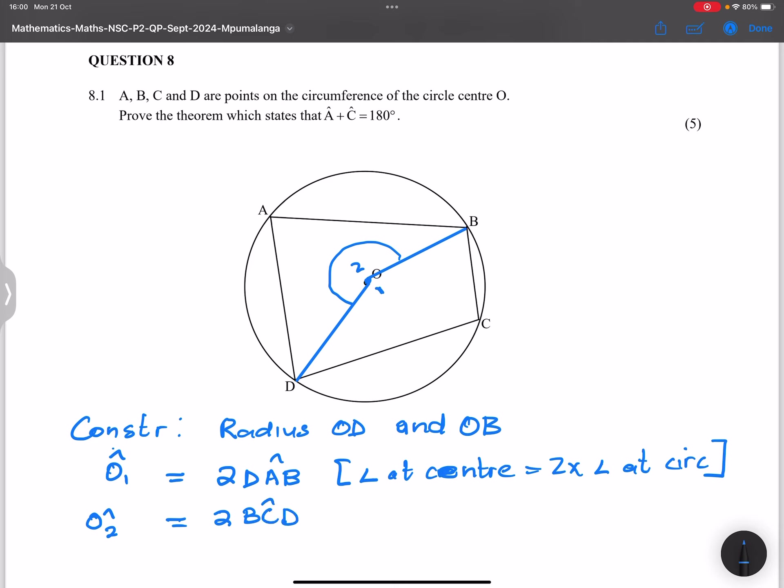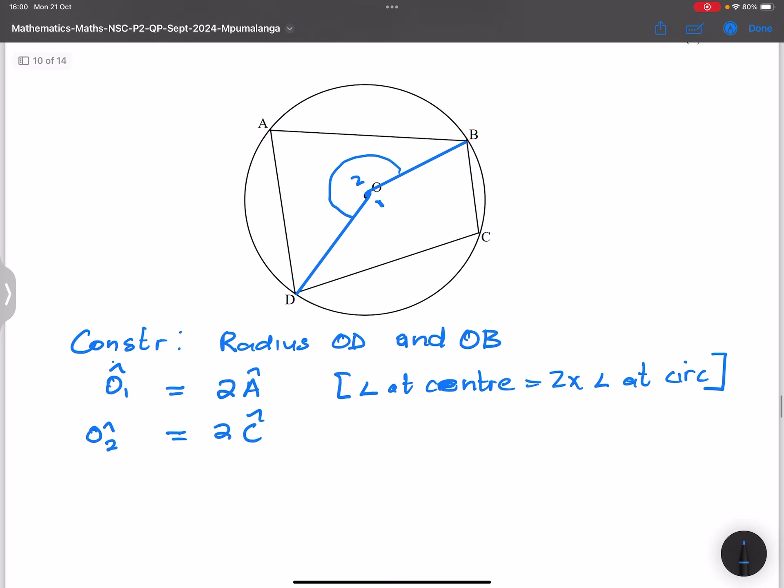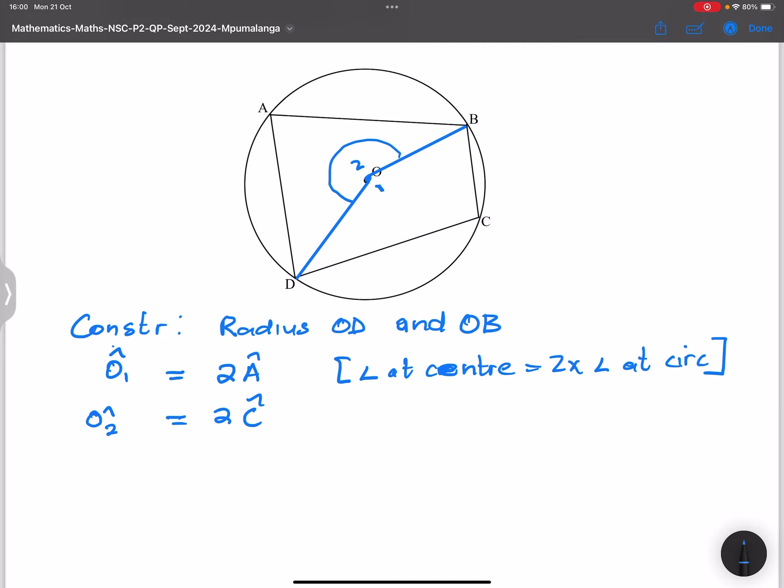Alternatively, we could call this angle A and we could call this angle C. Now, if I look at that, ladies and gents, we are almost done. And by the way, this is for exactly the same reason: angle at center is equal to twice angle at circumference.